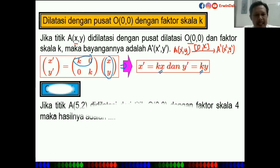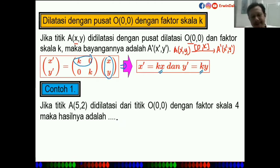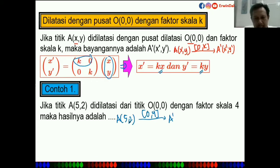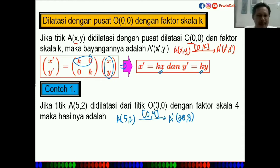Contoh soal: jika titik A(5,2) dilatasi dari titik pusat 0 dengan faktor skala 4, hasilnya adalah A' = (4×5, 4×2) = (20, 8).